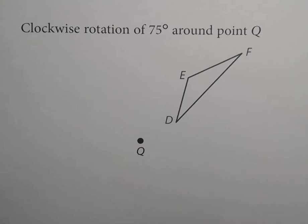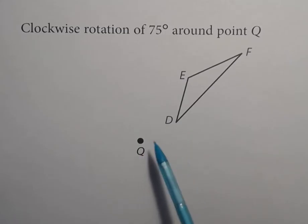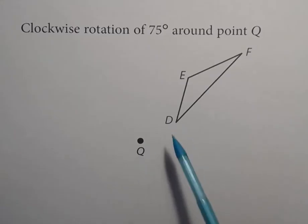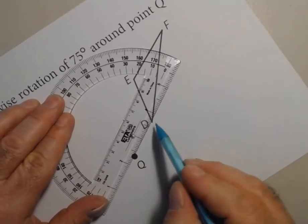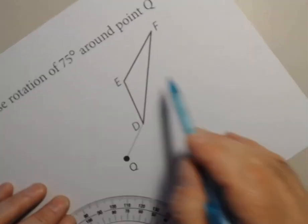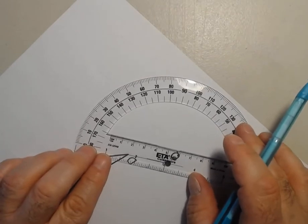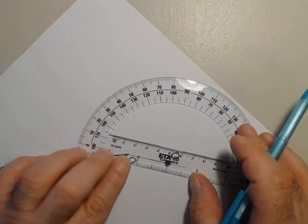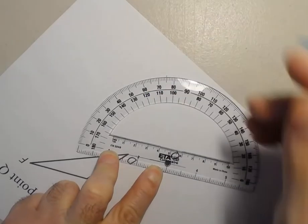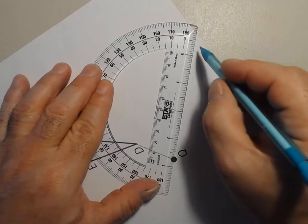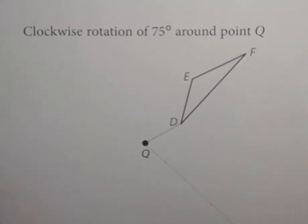Let's take a look at a second example. This one says clockwise rotation of 75 degrees around point Q. So this time we are moving in the same direction that the hands of a clock move, and every point will make a 75 degree angle from each point to their new location. We'll start with point D — draw a line connecting point D and point Q. Now I need to go clockwise, so I'm going to go this way and make a 75 degree angle. I'm on this side, so it's the top row and 75 is right here. I'll get my straight edge and draw my light line.